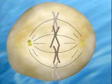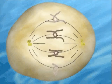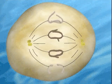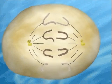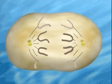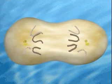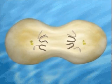Metaphase yields to anaphase as the centromeres separate, and the sister chromatids, now termed chromosomes, are pulled toward opposite poles of the spindle.